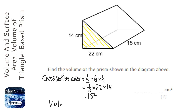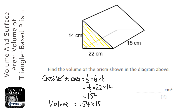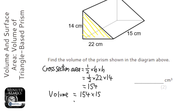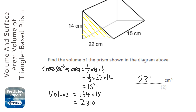The volume is the area of that triangle times how 3D it is, so times 15 — that's called the length. Times that by 15 and we get 2310. So my answer is 2310 cm³.